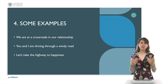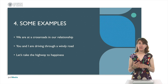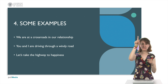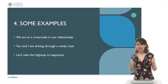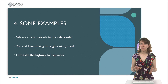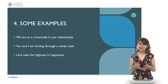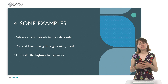Second, 'you and I are driving through a windy road.' Windy roads are more difficult to drive. They have curves, and it's a lot easier to fall into having an accident, for instance. That's something that can happen in a windy road. So, if you say that you and I are driving through a windy road, it means that you're at a dangerous spot in your relationship where things are being difficult.